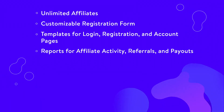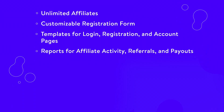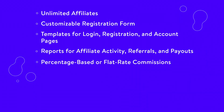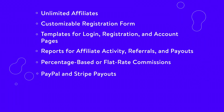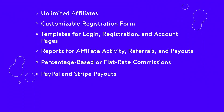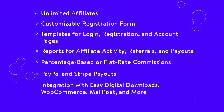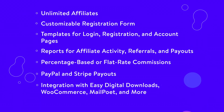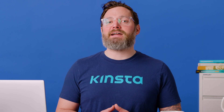Additional features include reports for affiliate activity, referrals and payouts, percentage-based or flat rate commissions, PayPal and Stripe payouts, and integration with easy digital downloads, WooCommerce, MailPoet and more. Ultimate Affiliate Pro is recommended for vendors that want to offer custom rewards for their affiliates, and it's available for $69 on CodeCanyon.